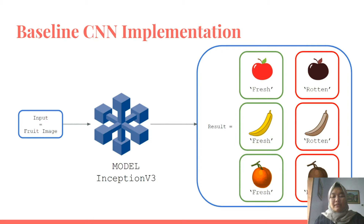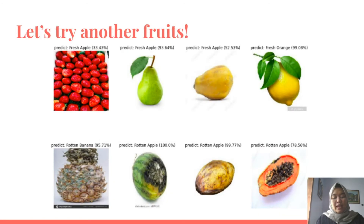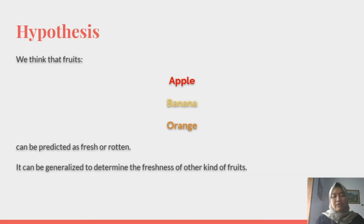For the baseline, we use Transfer Learning with InceptionV3 in our model, so we get results in six classes as mentioned. Here is an example of the results we got. Later, what if we want to try checking the freshness of fruits other than apples, bananas, or oranges? So let's give it a try.